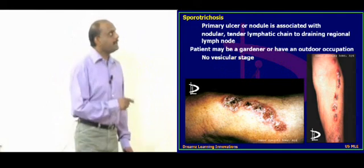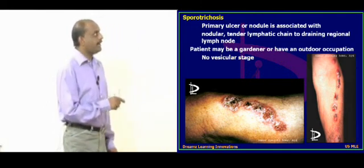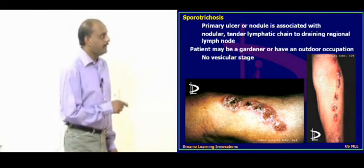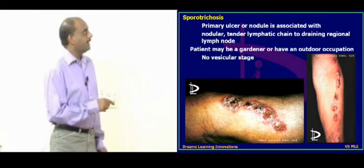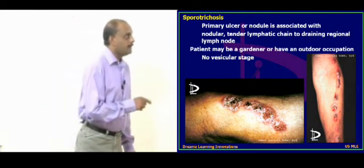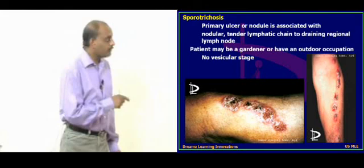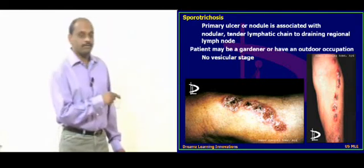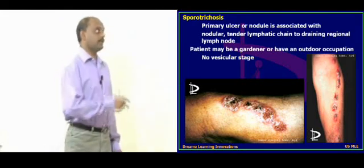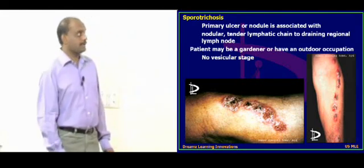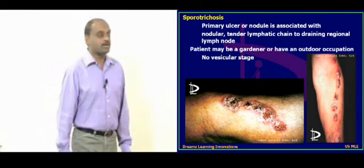You can see here how the nodular tender lymphatic chain involvement is present. You can also see how there is no vesicular stage, and there is development of nodular lesions, verrucous lesions, and warty lesions, which you see in sporotrichosis. Typically this individual is a gardener by occupation.